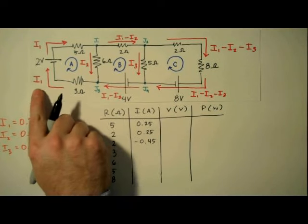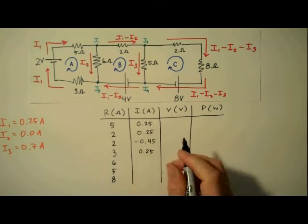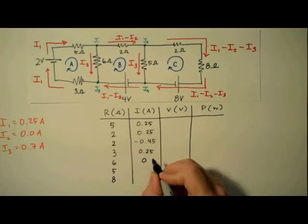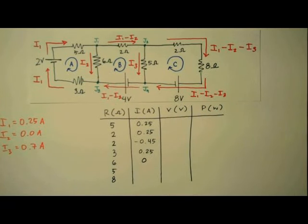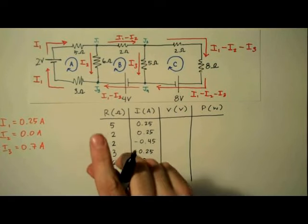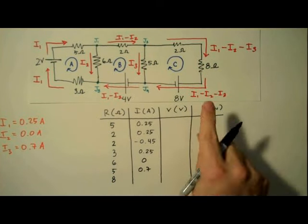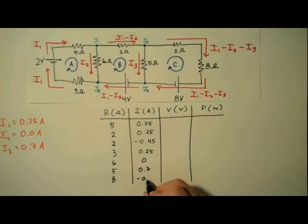So the 3 ohm resistor here sees I1, which is 0.25 amps. The 6 ohm in the center leg here sees I2, which is 0 amps. Again, unplanned, but really cool. Then the 5 ohm resistor sees I3, which is 0.7 amps, and the 8 ohm resistor, just like the 2 ohm above it, sees negative 0.45 amps. Excellent.